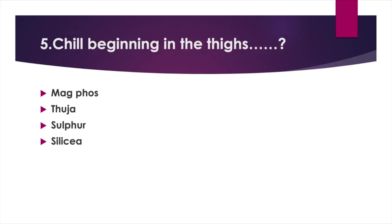Chill beginning in the thighs: Option A. Mag phos. Option B. Thuja. Option C. Sulphur. Option D. Silicea. Answer: Option B. Thuja.